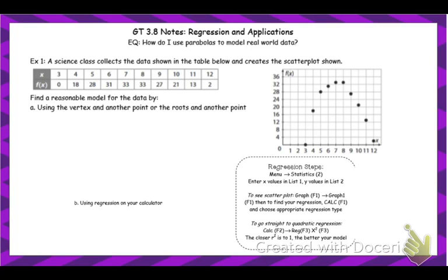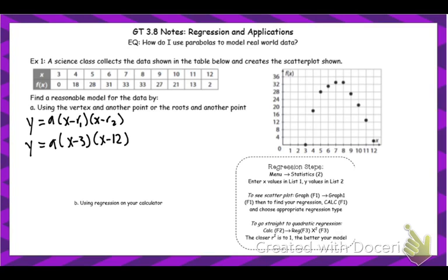So if you look at the first one, it gives us a table of data and then it shows us a graph. Before we go into how to do this in the calculator, we're going to review how we find this algebraically. We're just going to estimate. We can estimate using the vertex and another point, or we can estimate using the roots. I'm going to do the roots since those are a little easier to see. So to find my roots and write an equation, it would be a times (x minus r) times (x minus r). The best estimates of my roots here would be 3 and 12. To find a, I need to plug in some values for x and y — I'll use the point (5, 28).